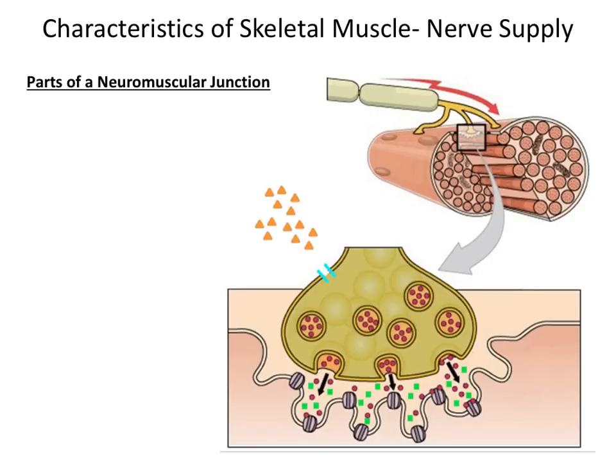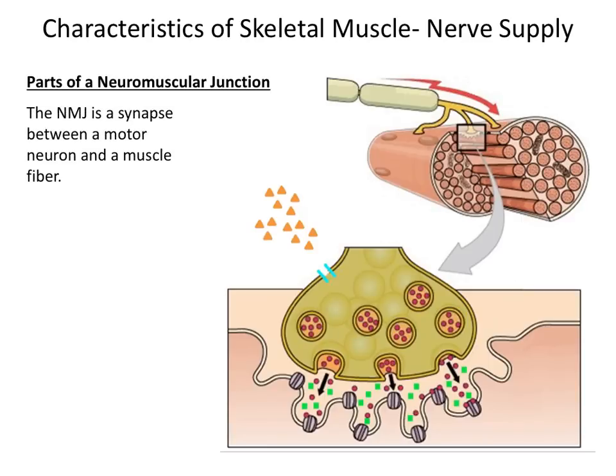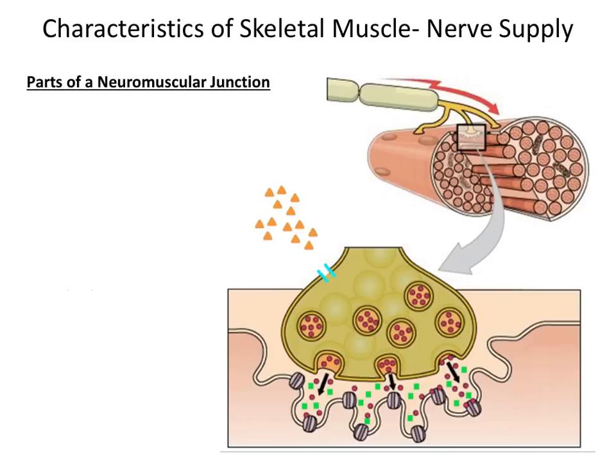Now we're going to take a closer look at a motor unit where an action potential is transferred from a motor neuron to the muscle fiber. This area is called the neuromuscular junction. The neuromuscular junction is a synapse between a motor neuron and a muscle fiber. First, we're going to take a look at all the parts of a neuromuscular junction that are associated with the motor neuron.